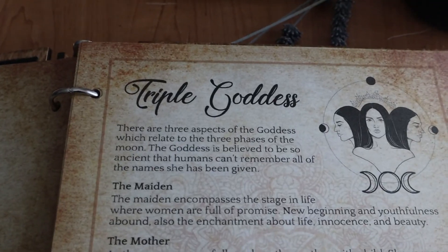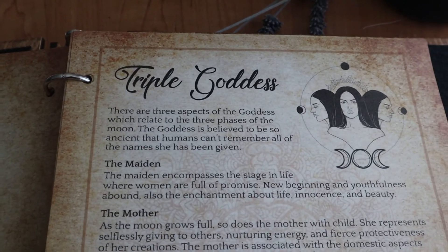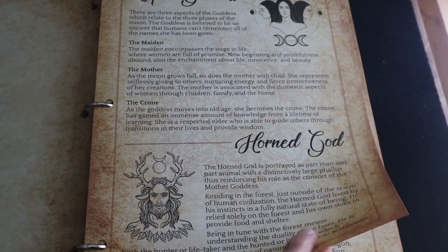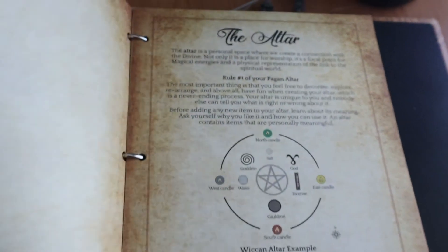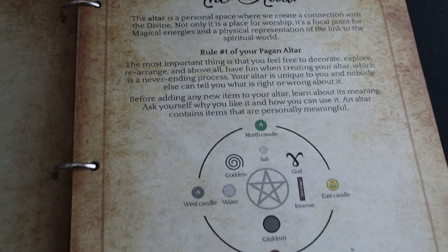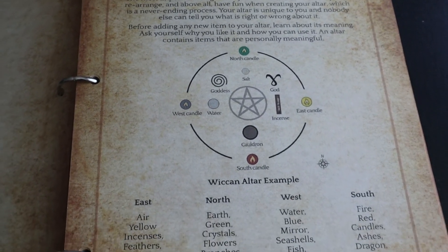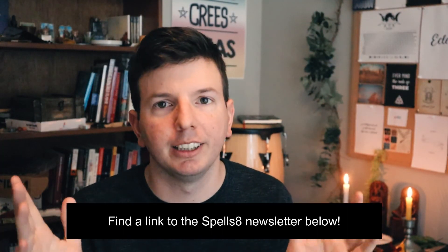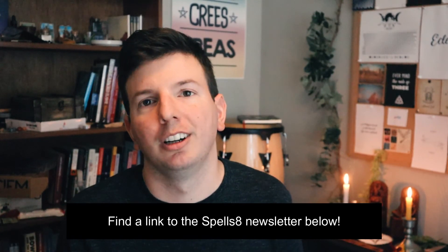I have a few printable pages that you can get on the link below for triple goddess, horn god, their aspects and also the weekend altar. Keep witching and join my newsletter for a steady flow of magic.